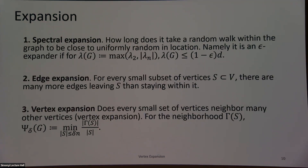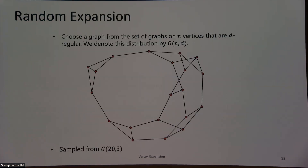So these are our three definitions. A natural question is: how good can my expansion be, and what graphs have very good expansion? Well, random graphs end up being almost optimal in all three types of expansion. For regular graphs, you can think of a random graph as selecting uniformly from all D-regular graphs on N vertices. Eventually we'll have D be a constant, but for now it's not a requirement.